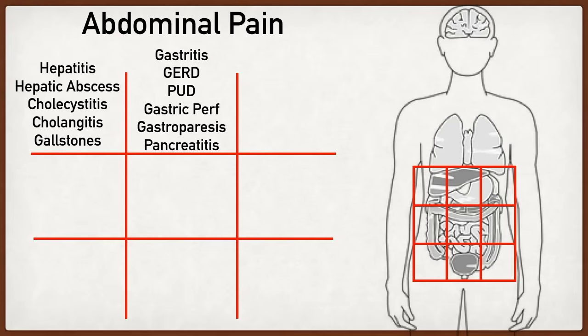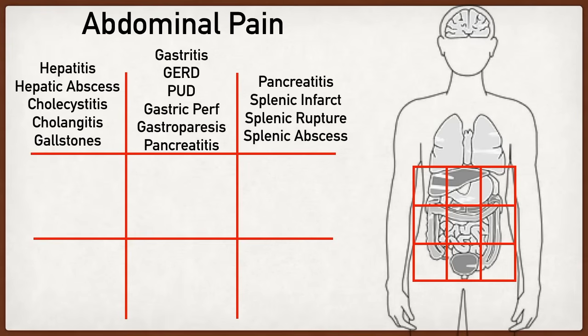Moving over to the left upper quadrant, we have parts of the stomach and pancreas again, so everything discussed for the epigastric region — including pancreatitis and stomach-related conditions — can also present as left upper quadrant pain. With the spleen located in the left upper quadrant, splenic pathology can lead to pain here as well, including splenic infarct, splenic rupture, and splenic abscess.